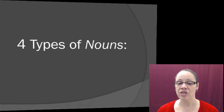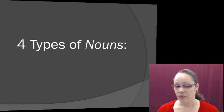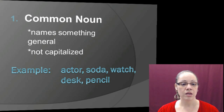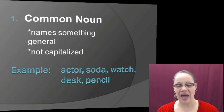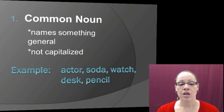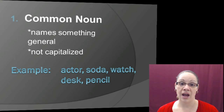There are four types of nouns. The first is the common noun, which names something general, not specific, and is not capitalized. Examples include: actor, soda, watch, desk, and pencil. Common nouns are only capitalized when they begin a sentence, question, or piece of dialogue.